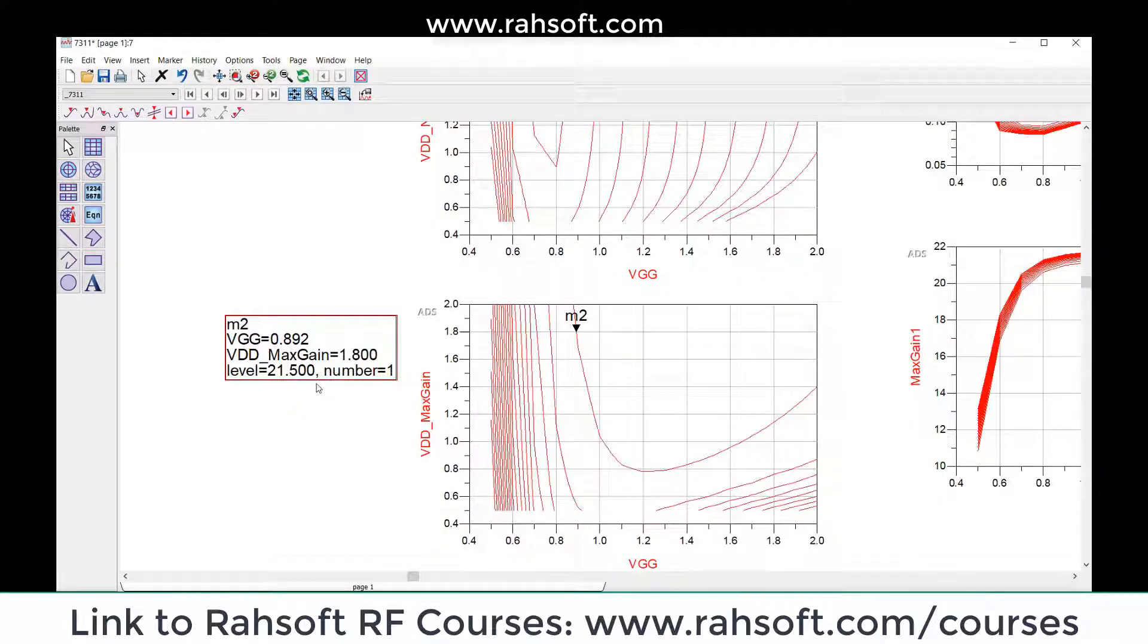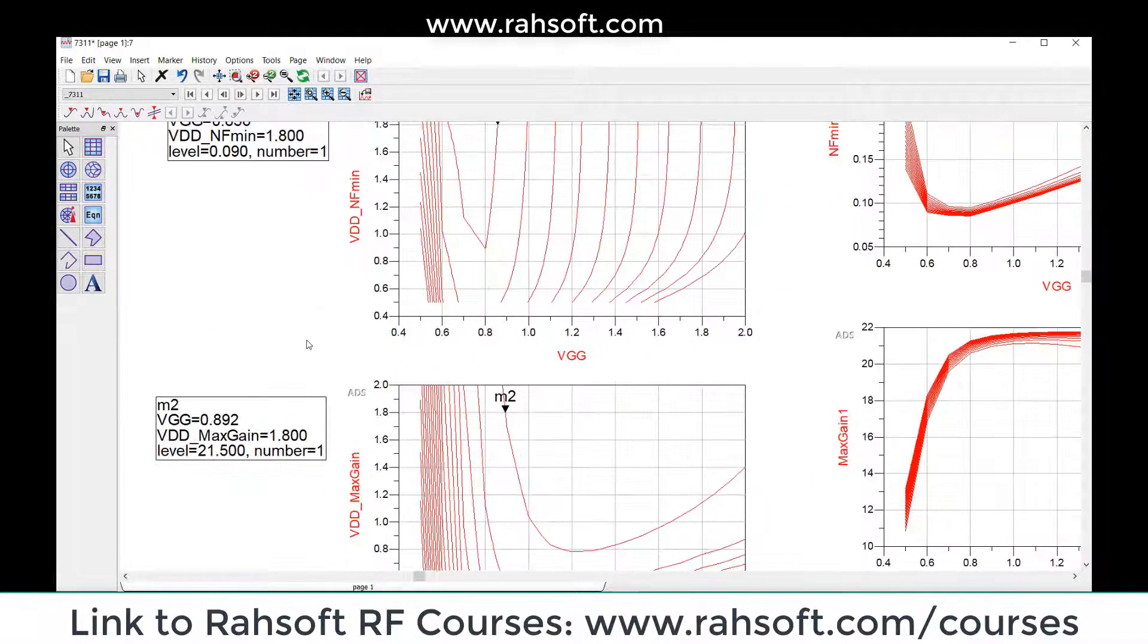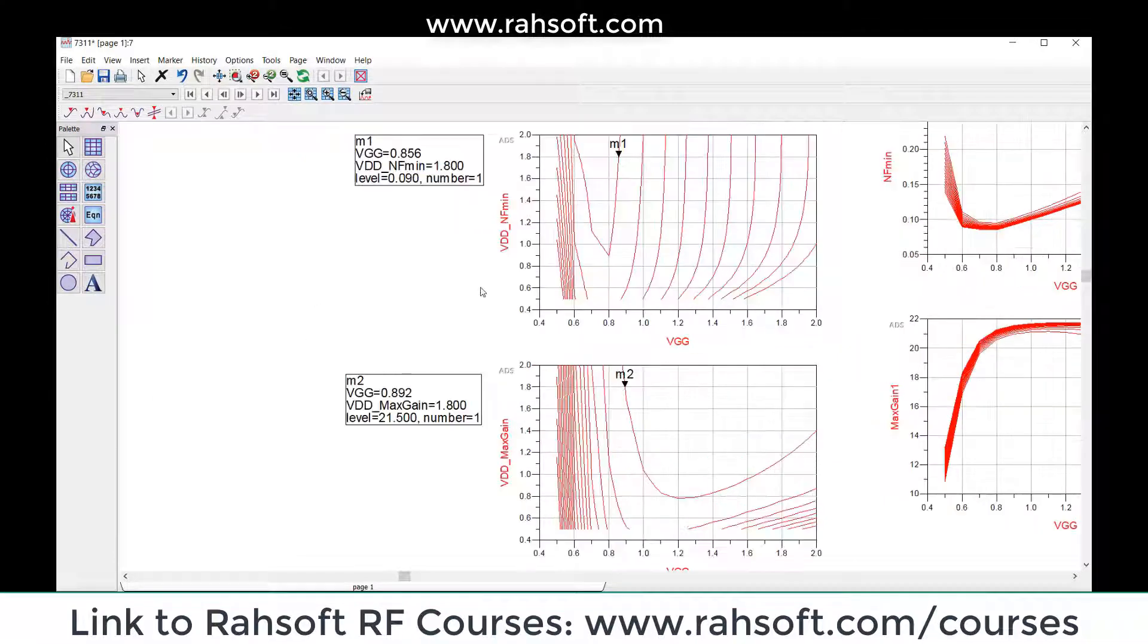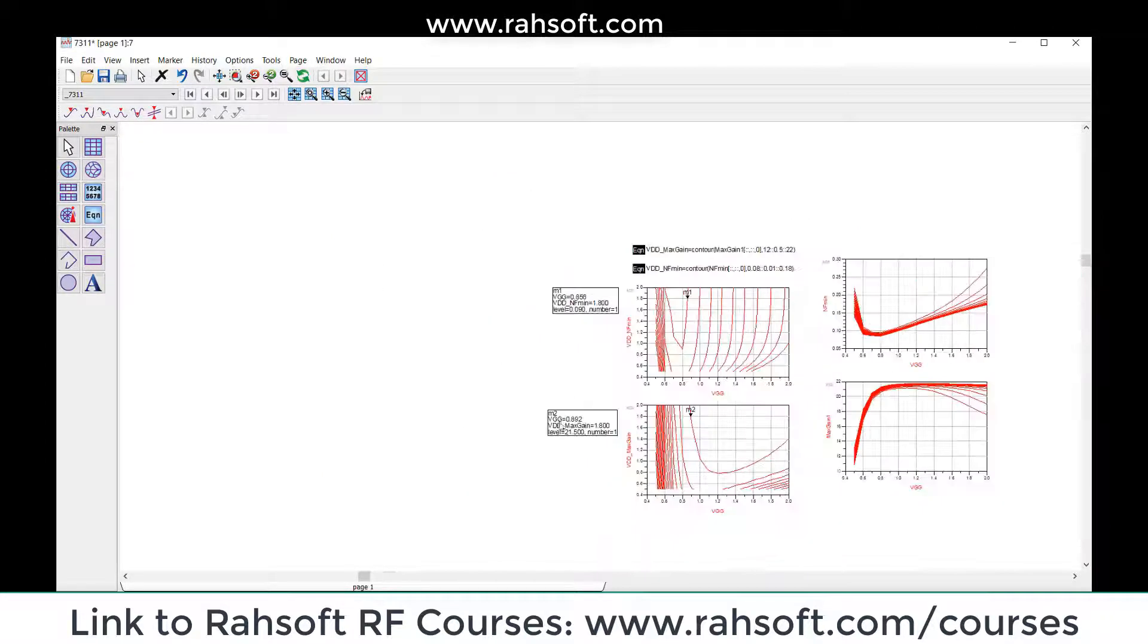If you remember in the previous course, we said to design for max gain. This shows our max gain - a very good value of 21.5. It shows that this is a very good start for us to choose VGG 0.856 and VDD 1.8, which is a perfect point.